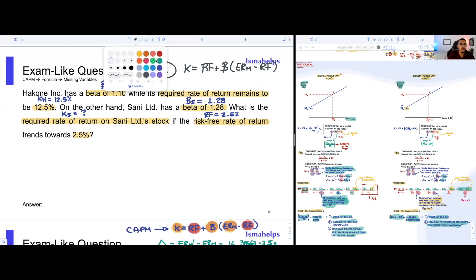So what we're going to do is write that at the top of our sheets so we have the formula right in front of us. We could identify the missing pieces and the pieces that we have. We're going to write our mission here, highlighted in red. We want to find the required rate of return on Sani's stock.